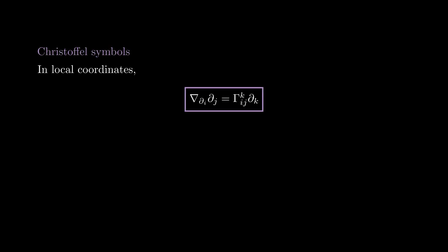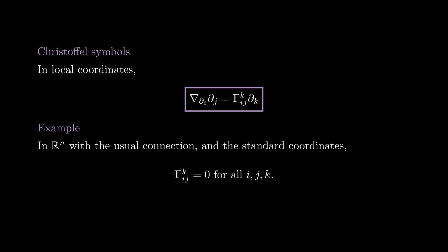When we work in local coordinates, it is common to deal with the expression Nabla_{partial_i} partial_j. The Christoffel symbols are the components of this expression in local coordinates, so the Christoffel symbol Gamma^k_{ij} is the k-th component of the derivative of partial_j in the i-th direction. In general, the Christoffel symbols are smooth functions because partial_i and partial_j are smooth vector fields. Notice that in Rn, when we are using the standard coordinates, the Christoffel symbols are just zero because the coordinate vector fields have constant coefficients.